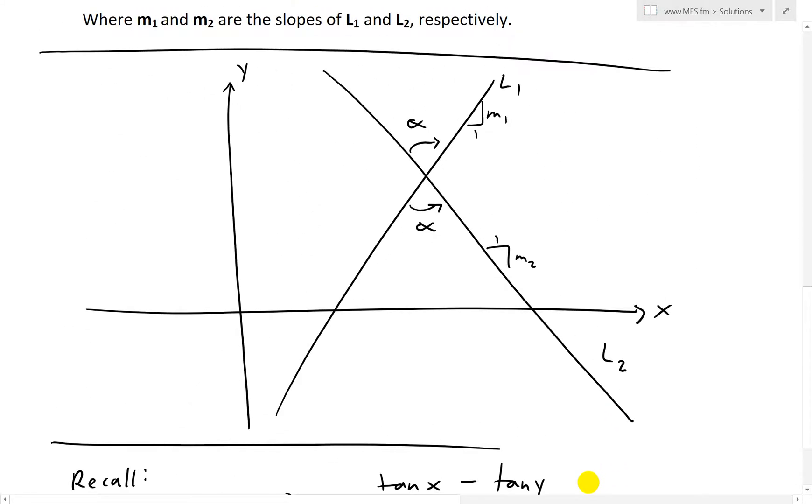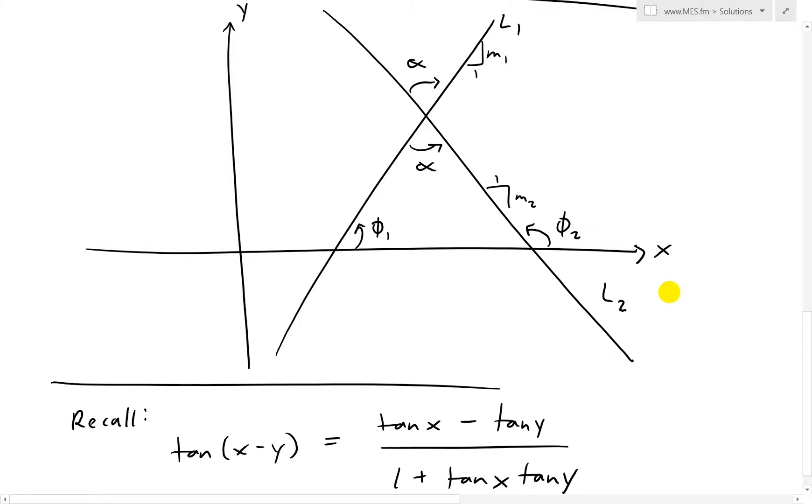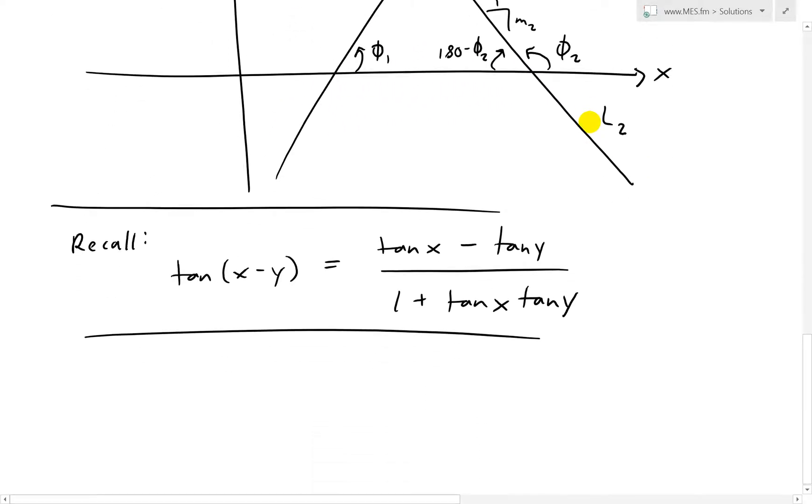To solve this, I'm going to write this angle as phi 1, and I'm going to call this angle right here on the second line phi 2. Notice here this is a flat line, so that's 180 degrees. So this angle in between is going to be 180 minus phi 2.